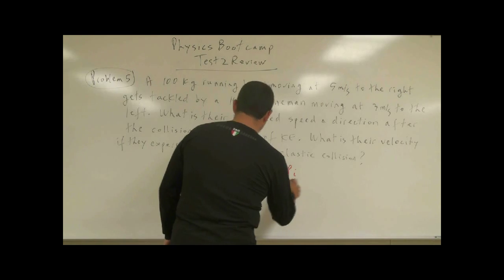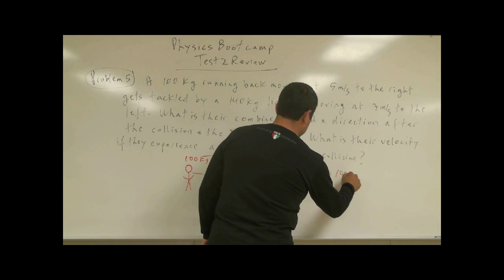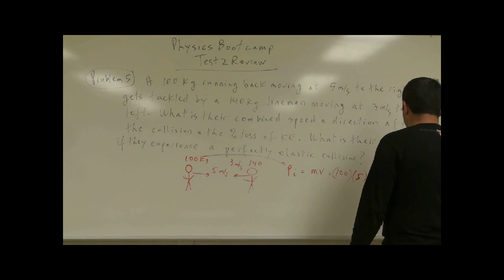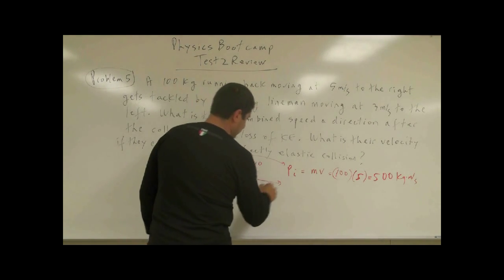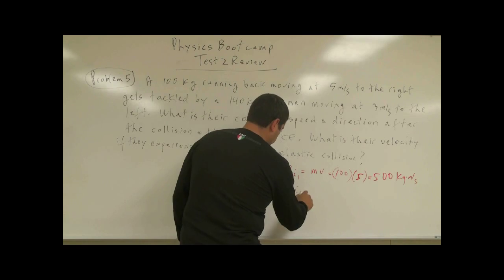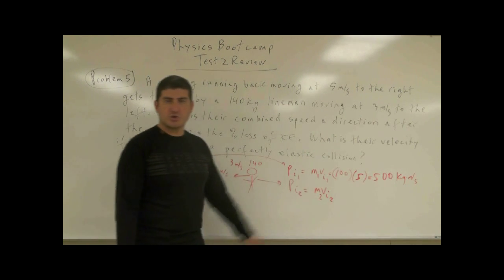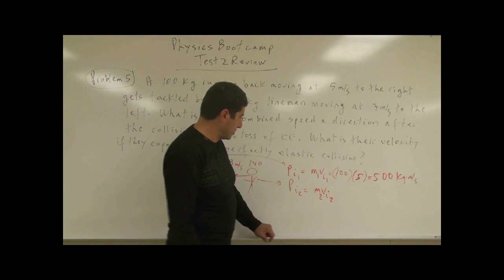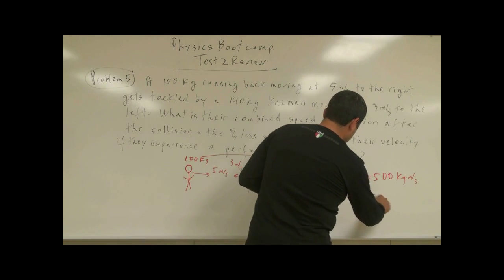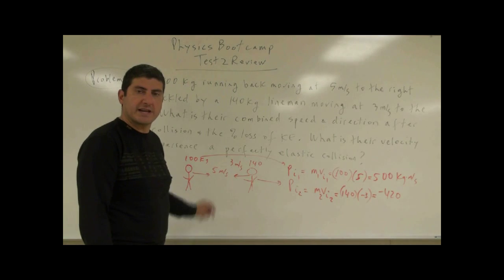The initial momentum of the running back is m₁v₁ = 100 × 5 = 500 kg·m/s. That's positive because it's to the right. The initial momentum of the lineman is m₂v₂ = 140 × (−3) = −420 kg·m/s, negative because it's to the left.